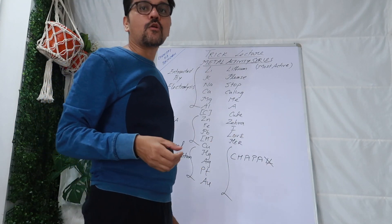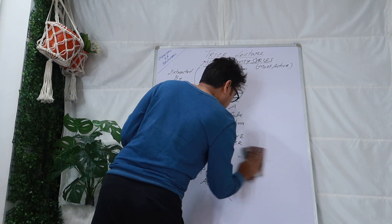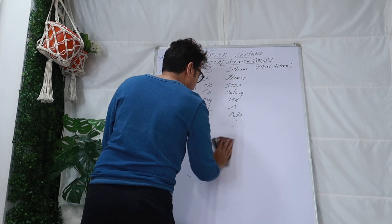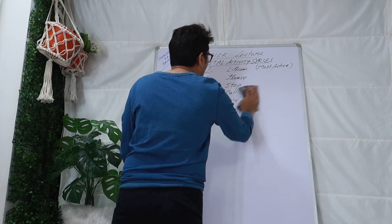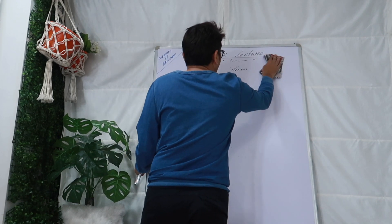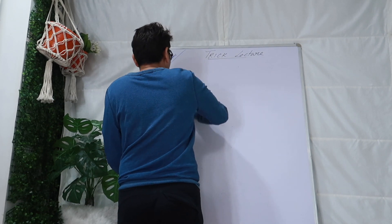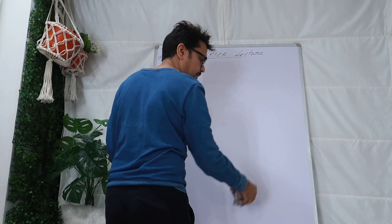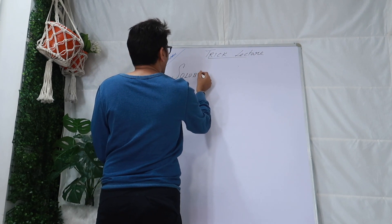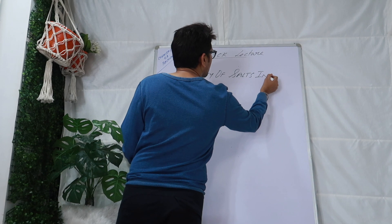Let's talk about the second trick, which is about the solubility of salts in water. Most of you have a problem with this — but there is no rote learning needed at all. There is a trick, and if you know this trick, you can figure out whether any salt is soluble in water or not.